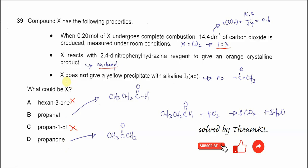Now the last statement: X does not give a yellow precipitate with alkaline iodine, means X has no methyl ketone. Propanal we know has an aldehyde group here, no methyl ketone. So the answer is B, propanal. Propanone cannot be the answer because it has a methyl ketone.